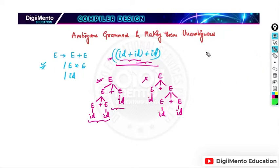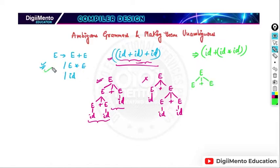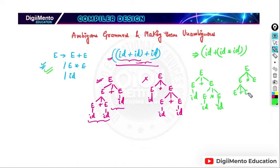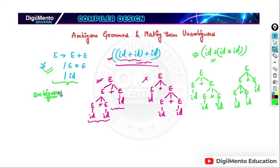Now let's take one more expression: id plus id star id. If we try to draw the parse tree, we get E plus E and, using this grammar, we generate id and id. We also get another parse tree. So we are getting more than one parse tree for this expression as well. We can clearly say this grammar is an ambiguous grammar.